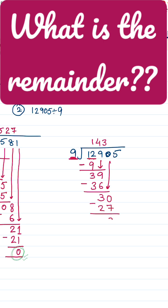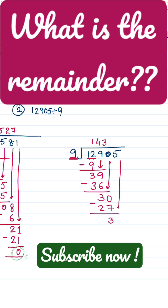Then we bring down 5. Now 9 times 4 is 36 and 9 times 3 is 27, so 5 was the last digit to come down.